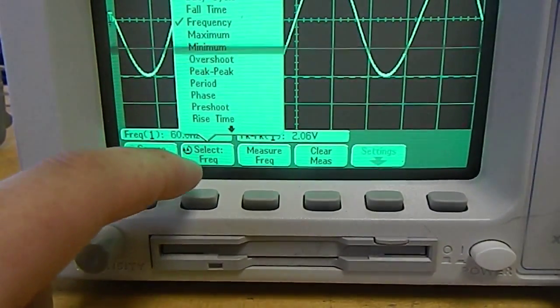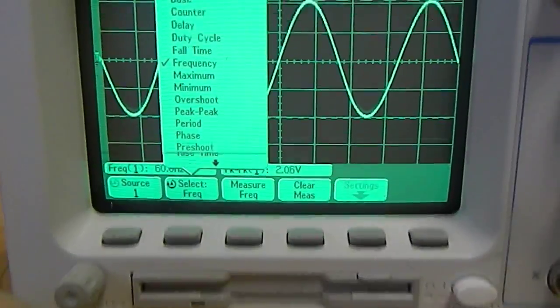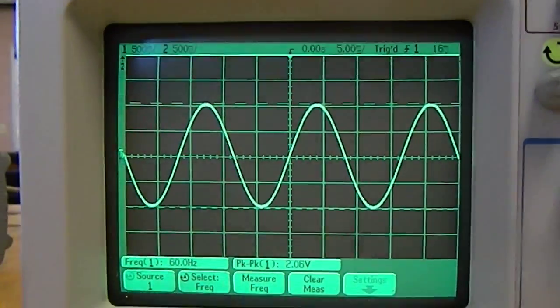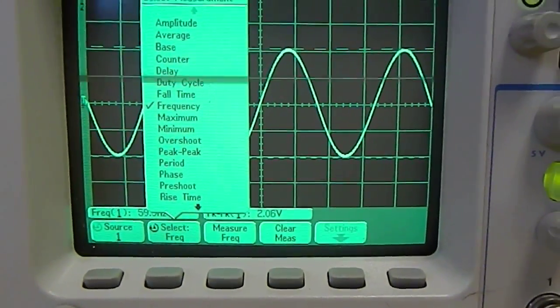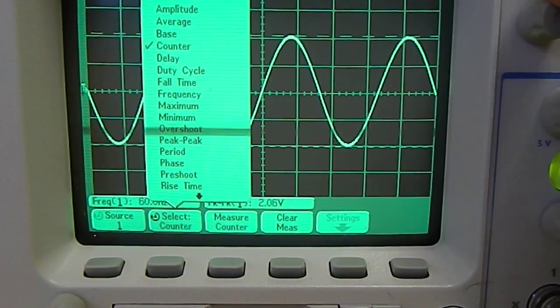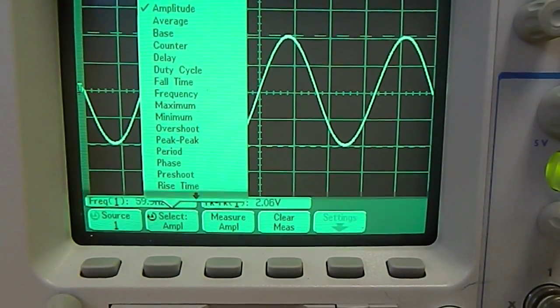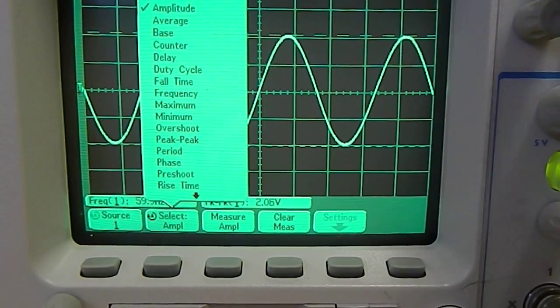Then you can select the type of measurement. By clicking select, you can choose to measure the amplitude, the average, peak to peak, etc.